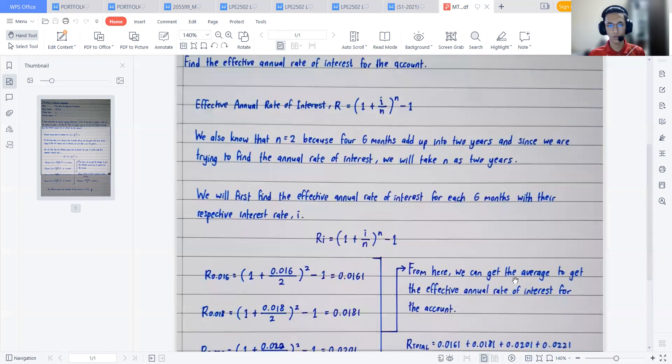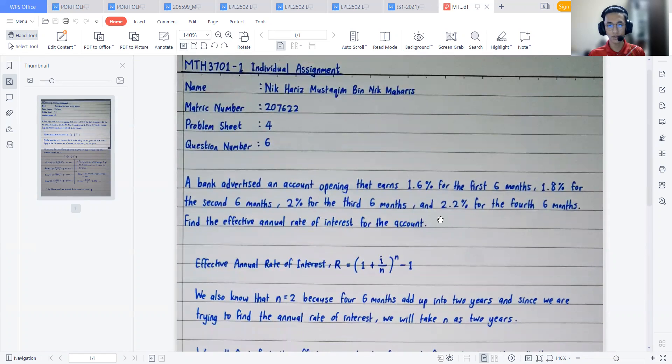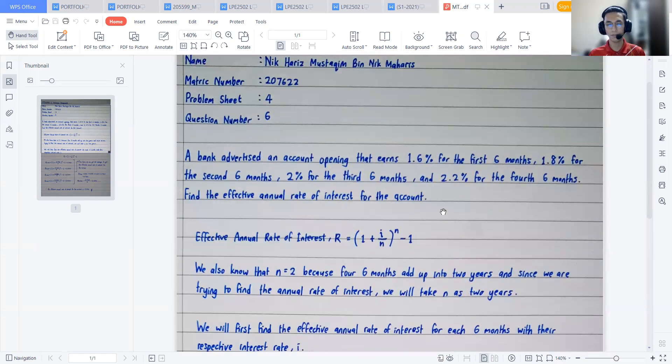If we look back at the question, I have used all of the keywords and all of the information that the question gave me. I used the percentage that they gave, I used the data that they gave, and I managed to use it to find the effective annual rate of interest, which is the main goal of this question.